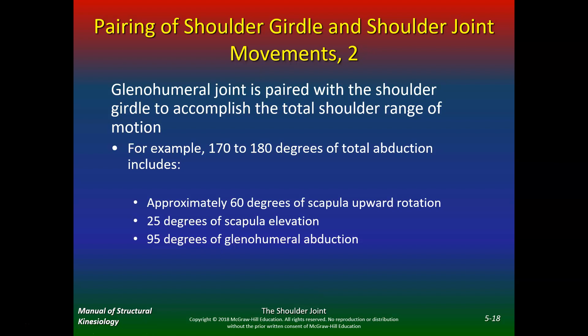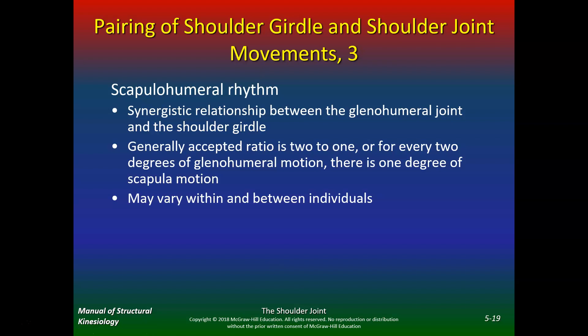The glenohumeral joint is paired with the shoulder girdle to accomplish total range of motion. For example, 170 to 180 degrees of total abduction includes approximately 60 degrees of scapular upward rotation, 25 degrees of scapular elevation, and about 95 to 100 degrees of glenohumeral abduction. If lacking glenohumeral abduction, you don't want to just keep jamming the glenohumeral joint — you need to work on scapular elevation and upward rotation. The scapulohumeral rhythm is a 2-to-1 ratio: for every 2 degrees of glenohumeral motion, there's 1 degree of scapular motion.